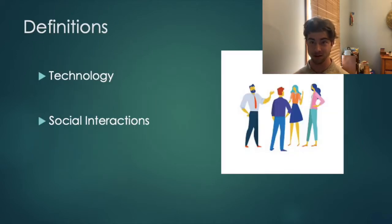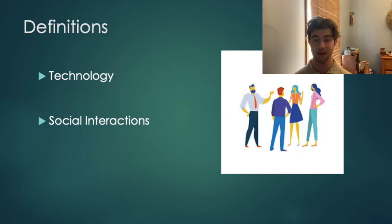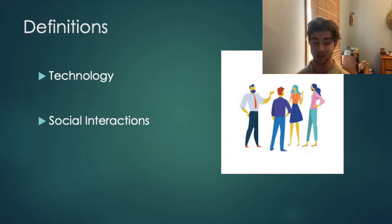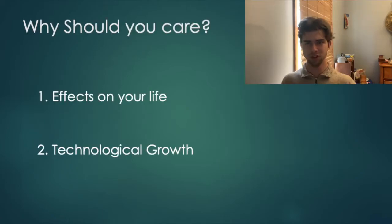So let's get right into definitions. Definition number one is technology — technology is defined as the application of tools, materials, and knowledge to solve problems and extend human capability. It includes machines like computers but also techniques and processes. It might seem like all technologies are like electronics, but that is only just modern technology. Another definition is social interaction — a dynamic sequence of social actions between individuals or groups who modify their actions and reactions due to actions of their interacting partners. Social interactions can be differentiated into accidental, repeated, and regulated.